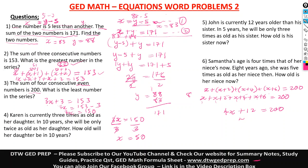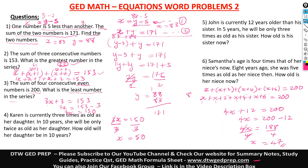Taking 12 to the other side: 4X equals 200 minus 12, which is 188. Dividing by four: 4 goes into 18 four times with a remainder of 2, and 28 goes seven times — so X equals 47. The question asks what is the least number, and since the numbers increase from X, the least number is 47.